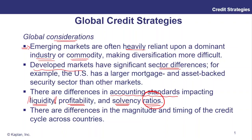Also, across different markets you've got different economic cycles, and if you've got different economic cycles then essentially you've got different credit cycles as well. That might be a good thing from a diversification perspective. One of the problems with globalization over the last few decades is that it has made it hard to diversify on a global basis, because when the global economy tanks it's hard to find somewhere to hide geographically. So any differences in the size and timing of the credit cycle could offer diversification benefits.